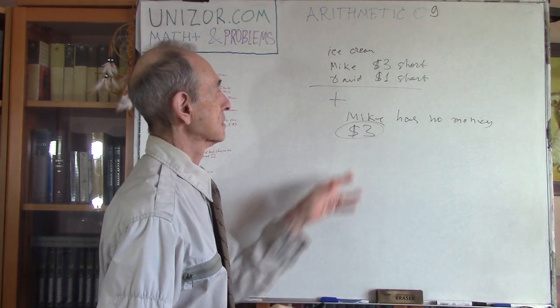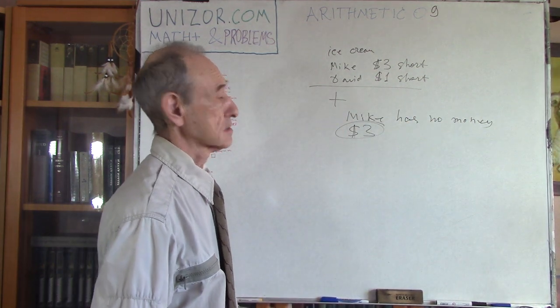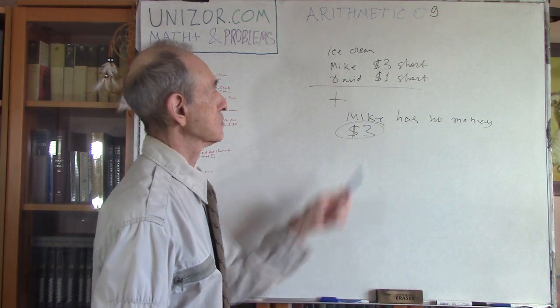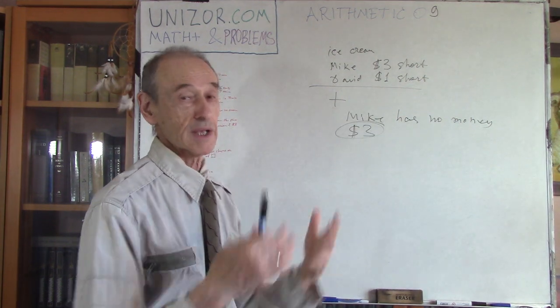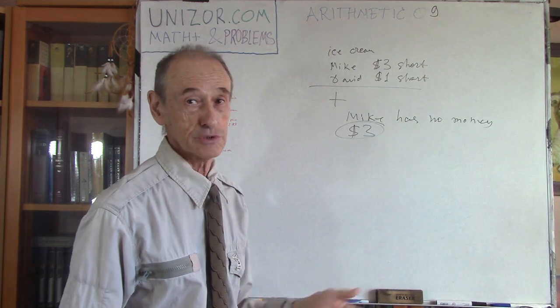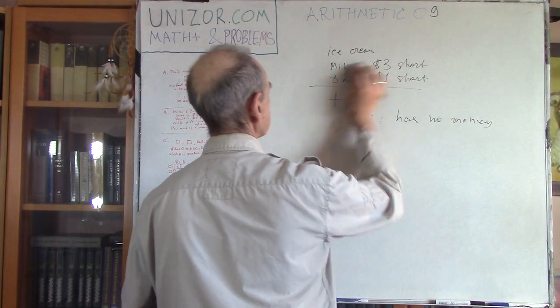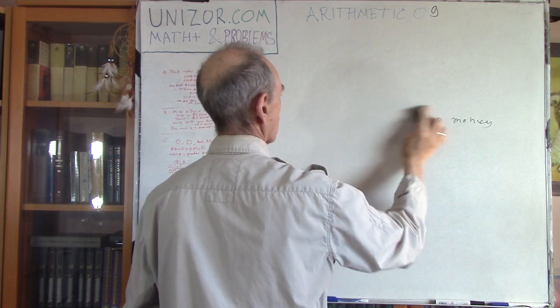Incidentally, David has two. So, David has two. Mike has zero. Scoop of ice cream is three dollars. That's why Mike is three dollars short. David is one dollar short. But if they combine, zero plus two would be still two. That would be still short. Simple. Don't really need the algebra here.